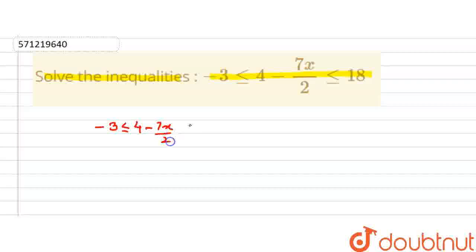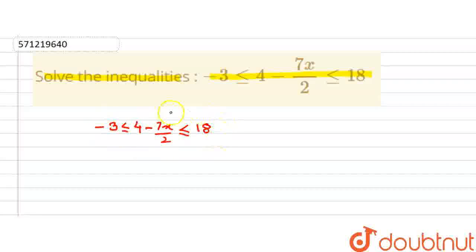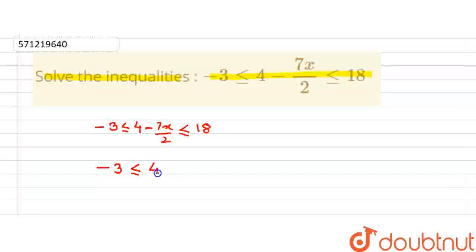We have the inequality: 7x/2 less than or equal to 18. To solve this inequality, let us first solve the left-hand side, which is given by minus 3 less than or equal to 4 minus 7x by 2.